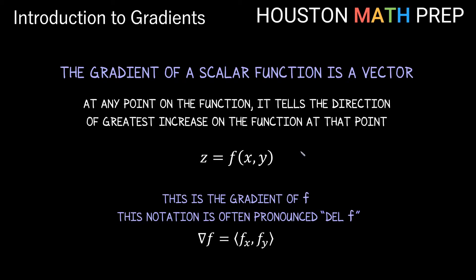We start with a scalar function z = f(x, y). For the gradient of f, we use this upside-down triangle notation — this symbol is called nabla, but in calculus you'll most commonly hear it called del. So we read this as del f. The gradient is an operation on a scalar function, but the answer it gives us is actually a vector function.